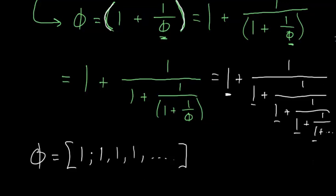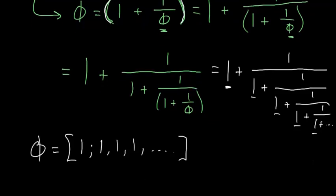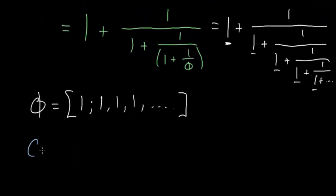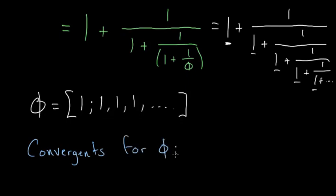Let's take a look at the rational approximations for phi, otherwise known as the convergents for phi. Recall that a convergent is obtained by cutting off this infinite continued fraction at different points.